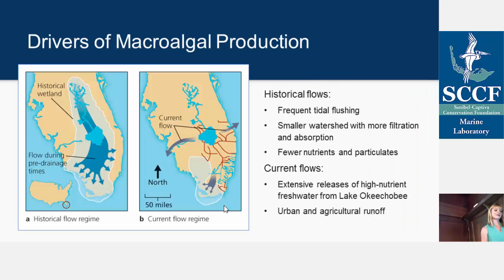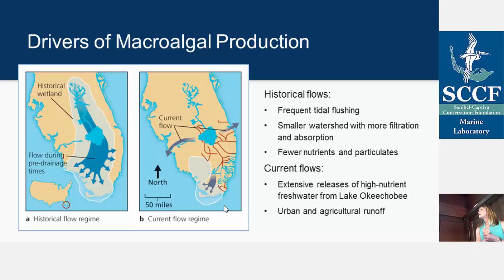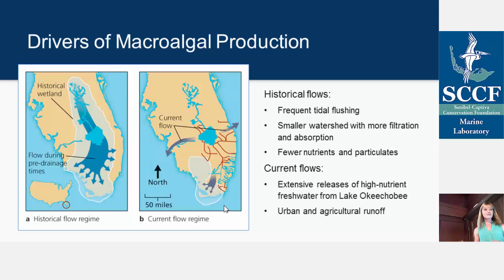What's driving our macroalgal production around here? Historically, Lake Okeechobee would flow and drain into the Everglades, and the Caloosahatchee River was disconnected, with a much smaller estuary, frequent tidal flushing of oligotrophic salty water from the Gulf, a smaller watershed, more filtration from land plants, and fewer nutrients entering the estuary. Currently, there's a connection between the Caloosahatchee and Lake Okeechobee, the land is more developed, and we frequently get extensive releases of high-nutrient water from Lake Okeechobee — which is what we think is driving our macroalgae blooms.